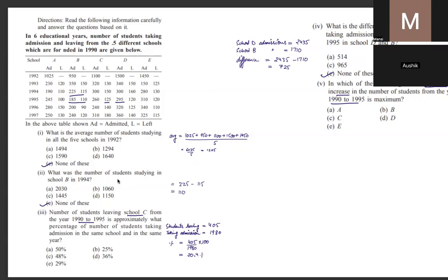The second question asks for the number of students studying in school B in 1994. You total the students taking admission, total the students leaving, and subtract to get the actual number studying. The answer is 110.